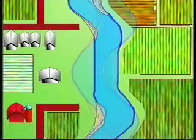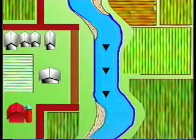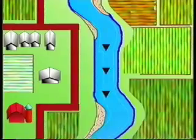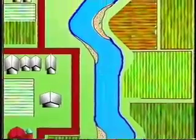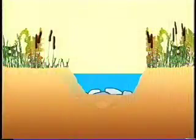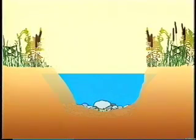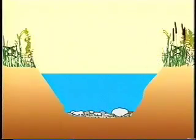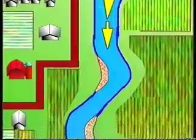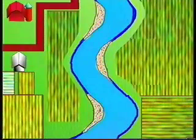Let's say you straighten a river to make it more convenient for a road. The river is going to become steeper and more powerful. The river is going to start to erode its bed in the upstream direction. As it erodes its bed, it's also going to start to erode its banks.